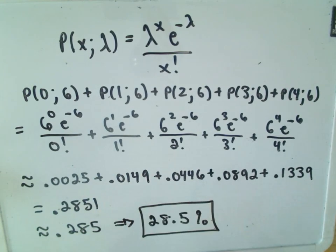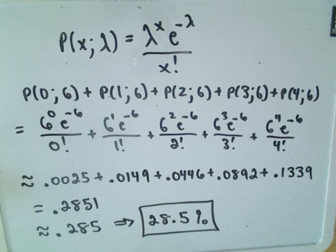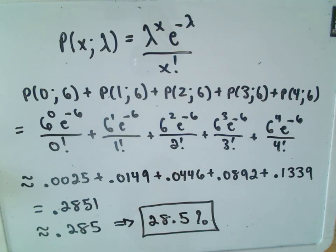So the probability of four or fewer customers over a nine-minute span, when we expect two customers every three minutes, is about 28.5%. Intuitively it should be below 50% since we expect six customers on average, and 28.5% confirms that. I hope this example makes sense — feel free to post any questions or comments and hopefully someone can point you in the right direction.